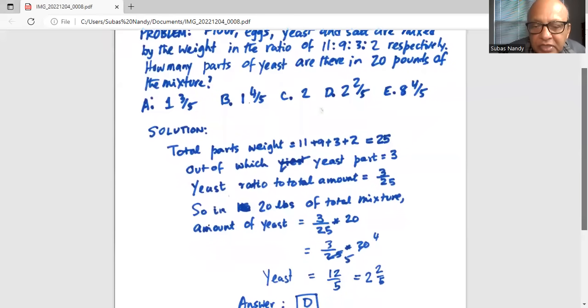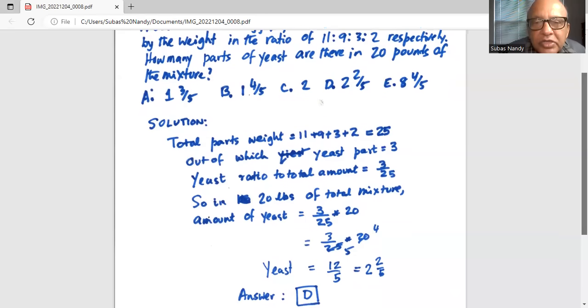That is the total amount of yeast in a mixture of 20 pounds, which is 2 and 2/5. So 2 whole number and fraction is 2 out of 5, which is option D in the answer. So the correct answer is D.